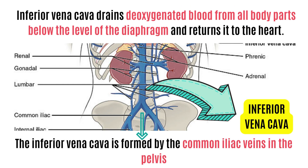Next is the inferior vena cava. The inferior vena cava drains deoxygenated blood from all body parts below the level of the diaphragm and returns it to the heart. The inferior vena cava is formed by the common iliac veins in the pelvis.